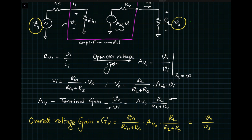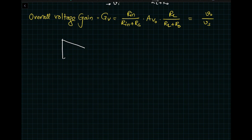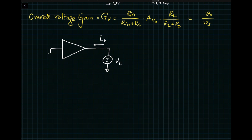Now let's look at calculating output resistance RO of the amplifier. To calculate RO, we apply a test voltage source Vt at the output and measure the test current IT flowing into the amplifier. When doing this, all independent voltage sources are set to zero — in this case VI or VS is connected to zero. Output resistance RO equals Vtest divided by Itest. RIN and RO have an important effect on overall gain and we should never ignore them.